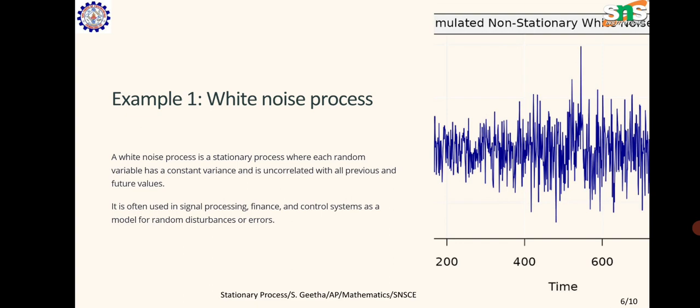Example 1: White noise process. A white noise process is a stationary process where each random variable has a constant variance and is uncorrelated with all previous and future values. It is often used in signal processing, finance, and control systems as a model for random disturbances or errors.